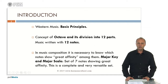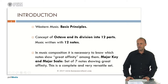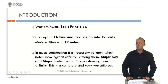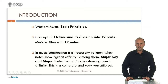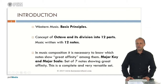Western music is based on several basic principles. The most important one is, of course, the concept of octave and its division into 12 parts. This means that Western music is written with 12 notes. If we want to compose music, it is necessary to know which notes show great affinity among them — which notes are affine among them.